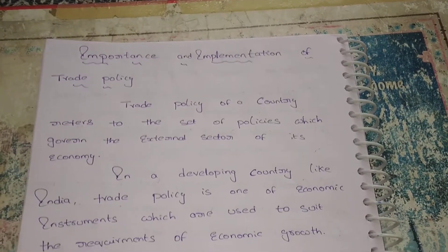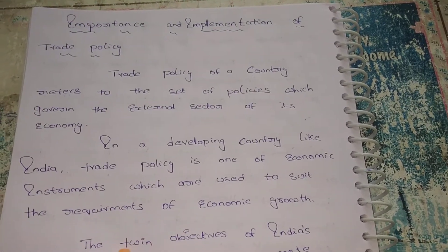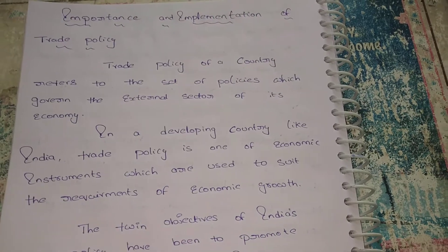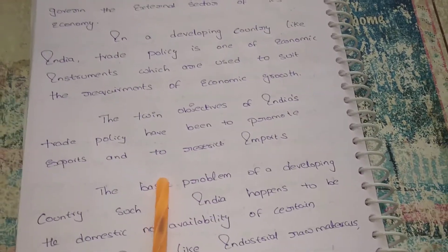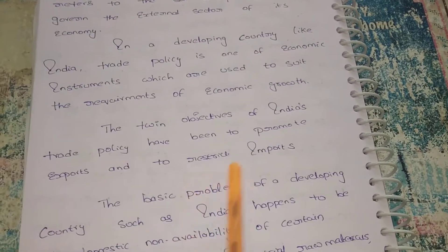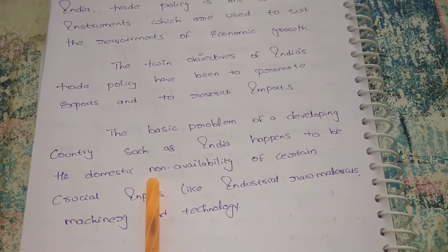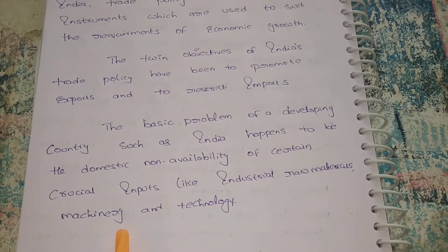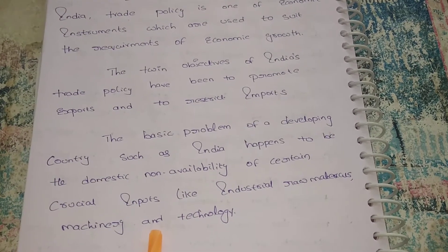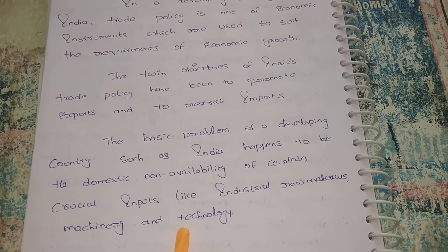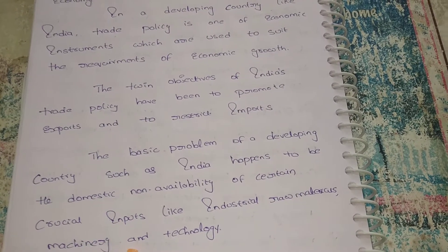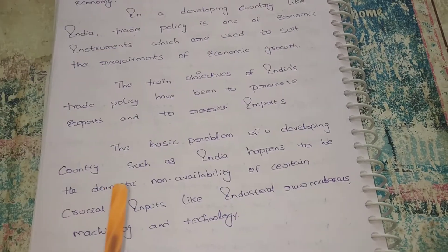To summarize so far: foreign trade is one of the tools for improving economic growth. We improve our economic growth by increasing exports and reducing imports. The two main objectives are to promote exports and restrict imports. The basic problem for developing countries is the unavailability of inputs such as industrial raw materials, machinery, and technology — without these, we cannot produce or export.